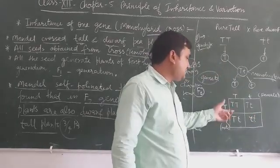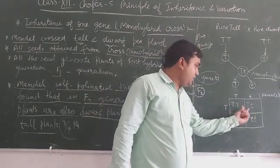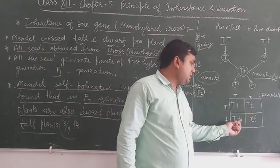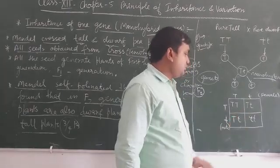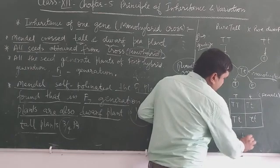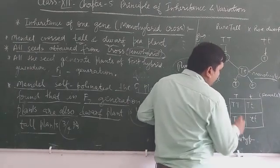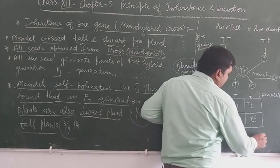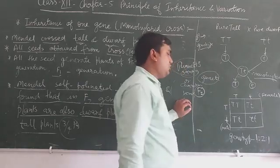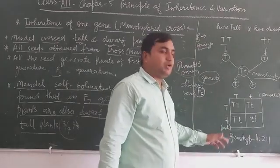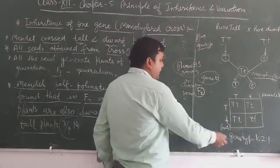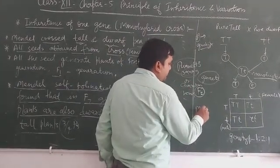Now you can see, pure tall plant. One tall plant, one tall, two hybrid tall, and one dwarf. One pure tall. Let's see here, genotypic ratio: one ratio, two ratio, one. And in phenotypic character, phenotype.